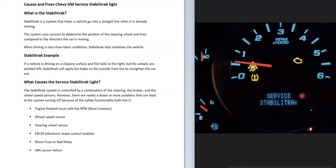If you have a Chevy or GM vehicle and you get the service stability track light come on, I thought I'd go over the causes of this and how you go about fixing it. Stability Track is basically a system to help a vehicle keep going in a straight line when it's already moving. It uses different sensors located in the steering wheel and on each wheel, and it's there to help the driver in less than ideal weather conditions. For example, if you're driving and the vehicle fishtails to the right but the wheels are pointed to the left, the Stability Track system can apply pressure to the brakes on specific tires until the vehicle straightens out.